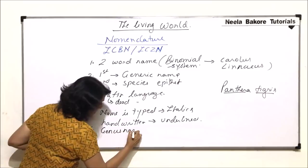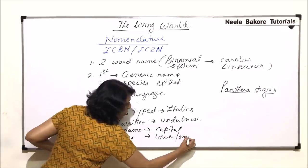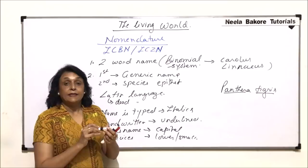So this becomes our next rule: the genus name will start with a capital letter, and the species name will start with a lower case or small alphabet. This is how the nomenclature is given.